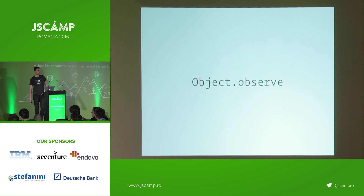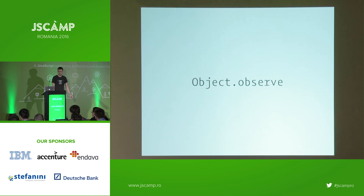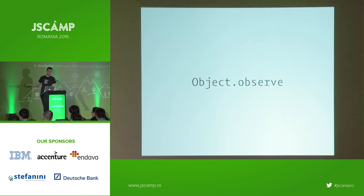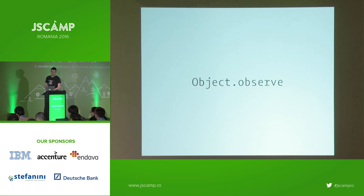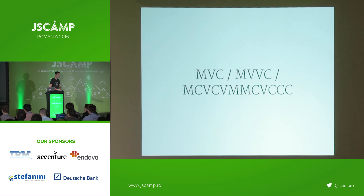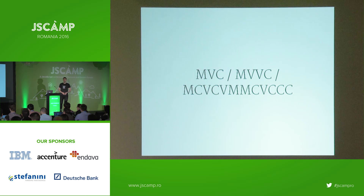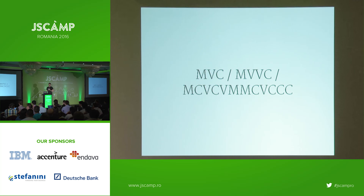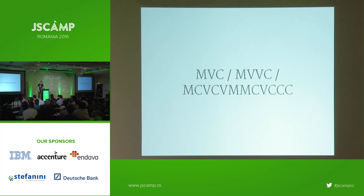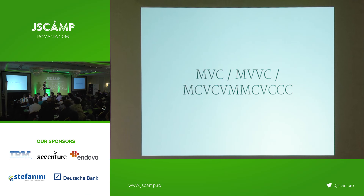Two-way data binding was so popular there was even a proposal to add Object.observe to the native language to make this easier for frameworks. That has since been dropped and will not be making it into JavaScript. Then we had the MVCs, MVVMs, and all sorts of patterns — really a thought process of 'let's replicate Rails.'